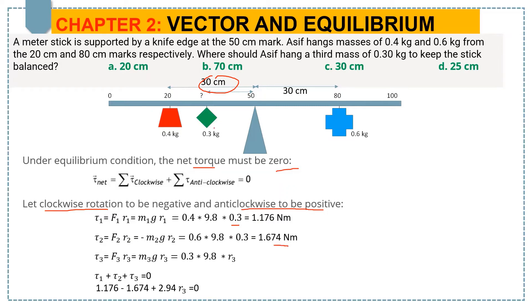And the third mass, which we suppose to be hanged at this point, suppose that distance is R₃. So simply I put the value and write the equation.